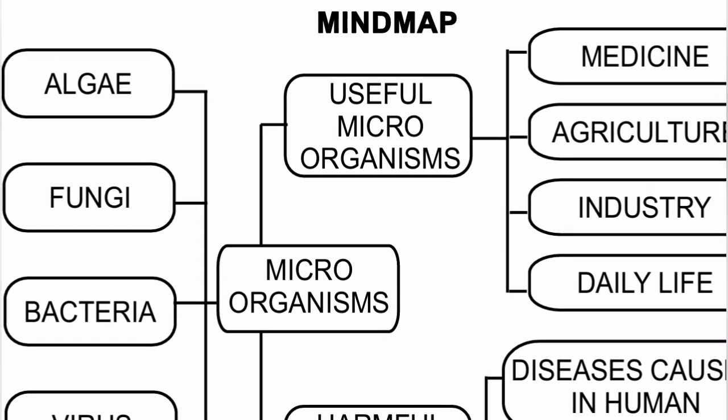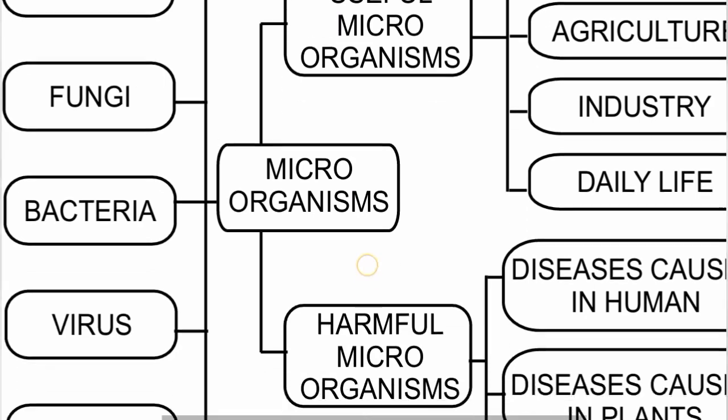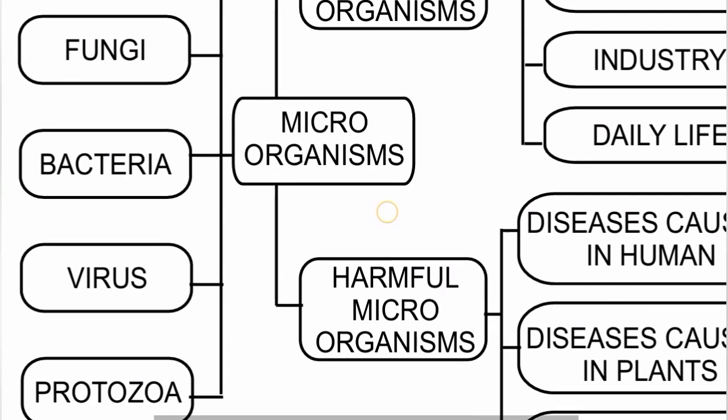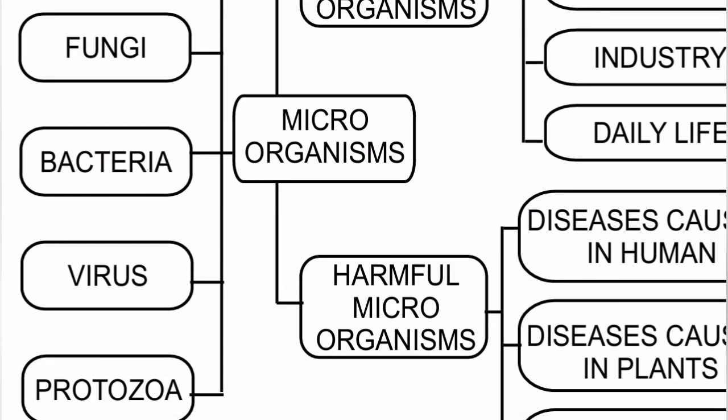Algae have their characteristics. Fungi have their cell structure. Then bacteria, then virus. Protozoa include flagella, Euglena, and Paramecium.